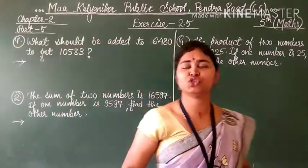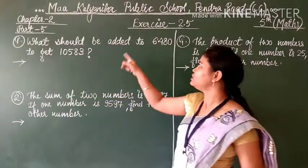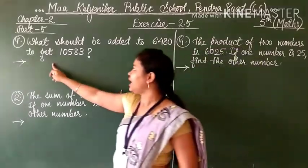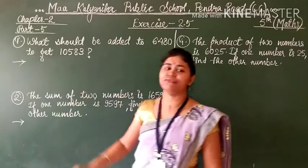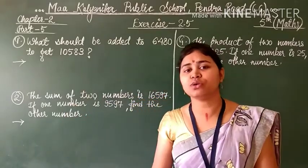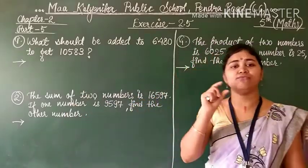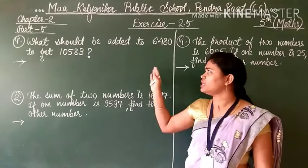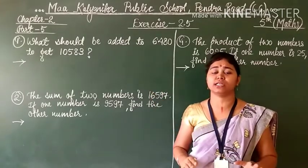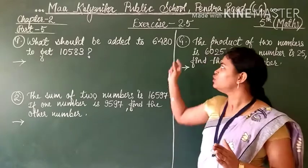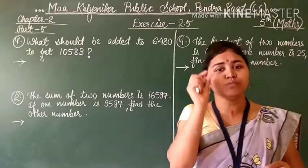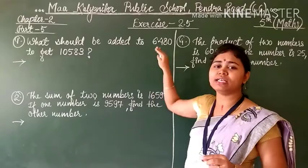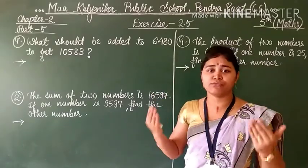Question number 1: What should we add to 6480 to get 10583? Students, I will give you some tricks so that you can understand the question very easily. We will take some small different numbers as examples so that it will be easy for us.